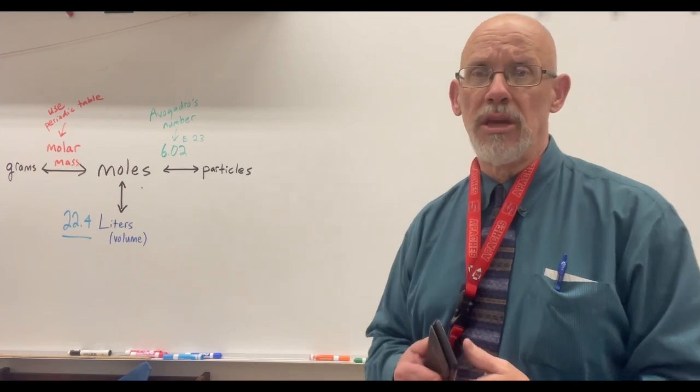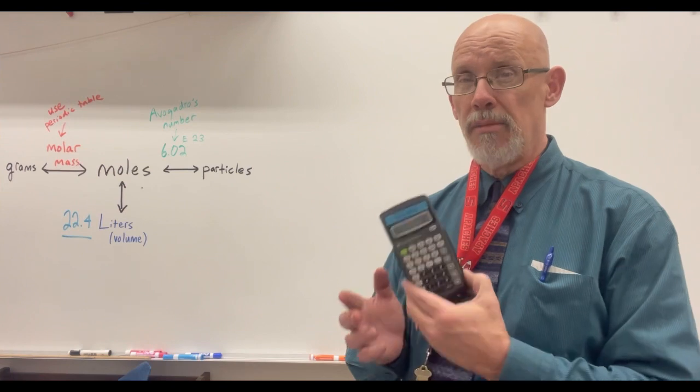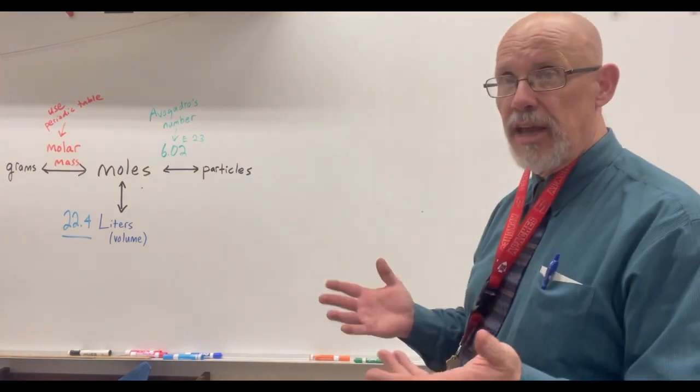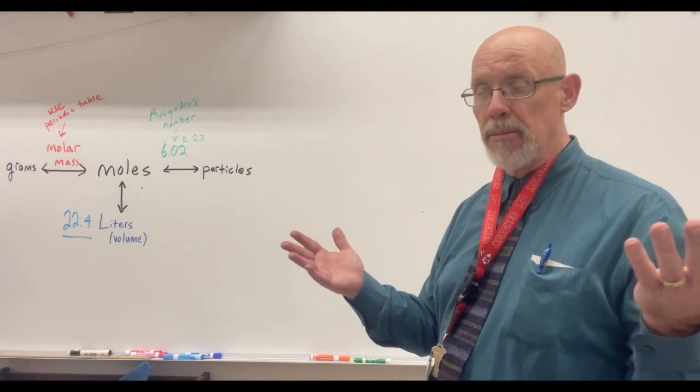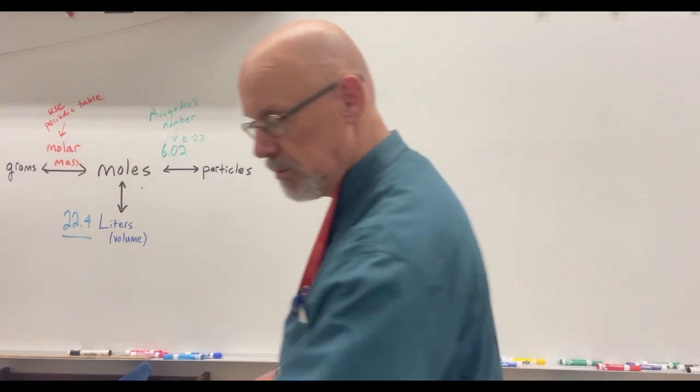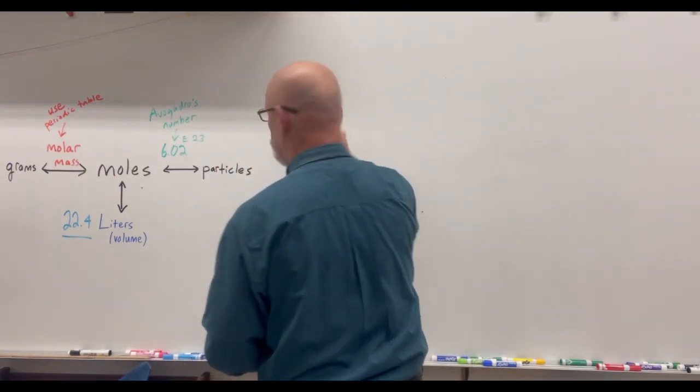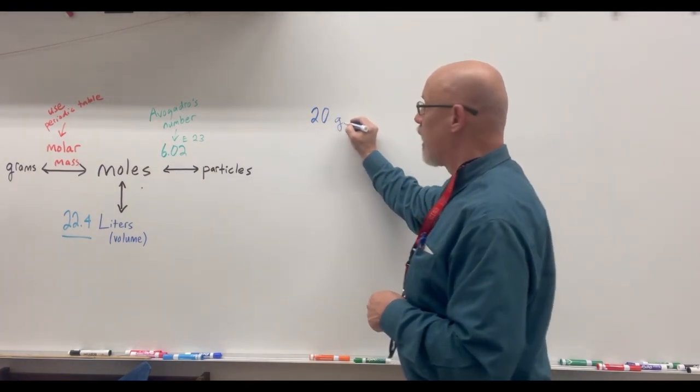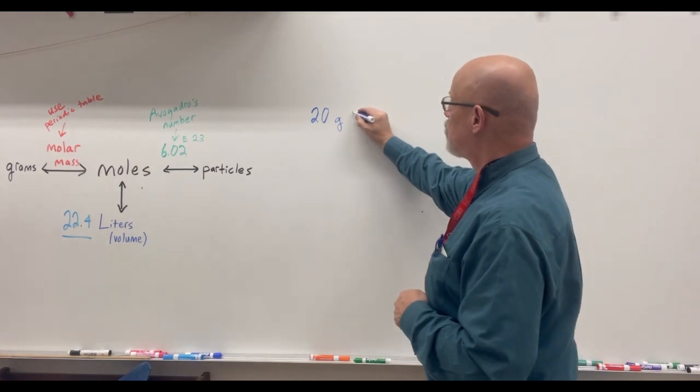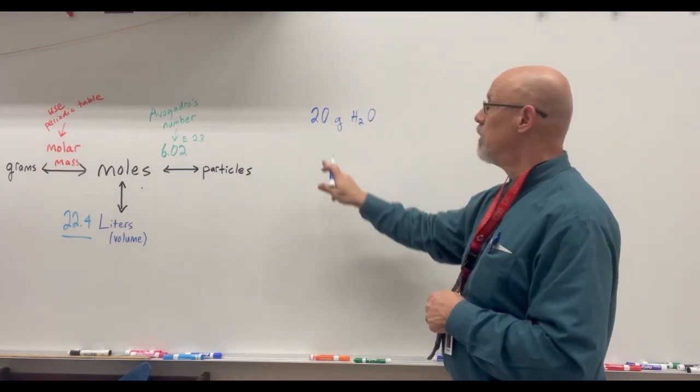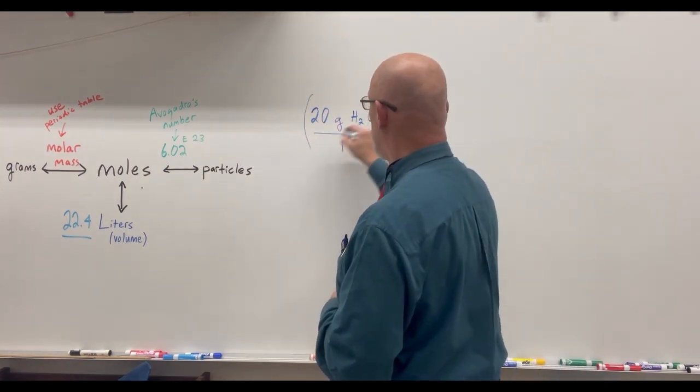So let's start with the simple moles to grams conversion problem. To do this it may be handy to have a calculator. Let's say that we start off with 20 grams of water. So I write 20, that's the number, and I write grams, that's the unit, and I write H2O because that's the formula for water. Number, unit, substance. And we put this as a fraction over one inside parentheses.